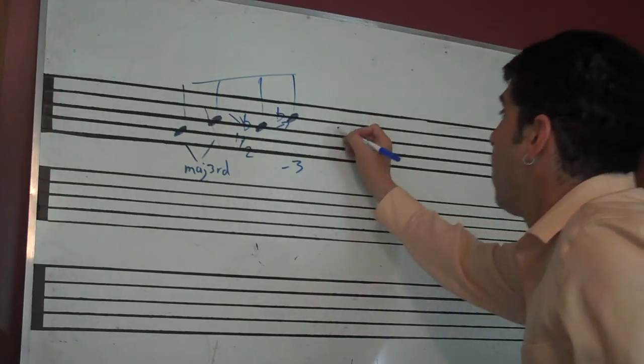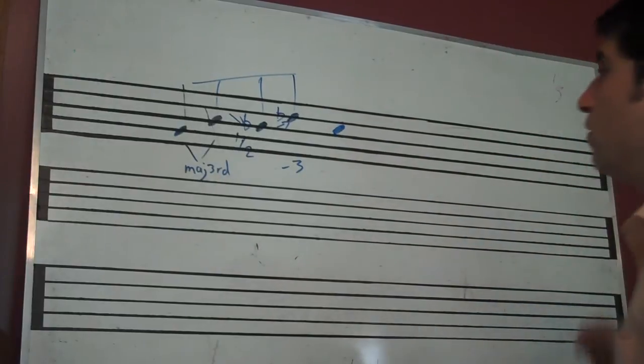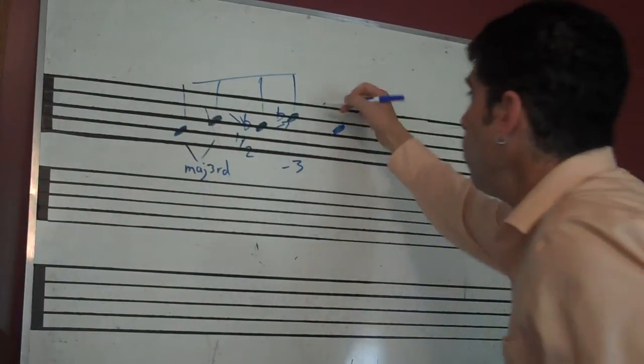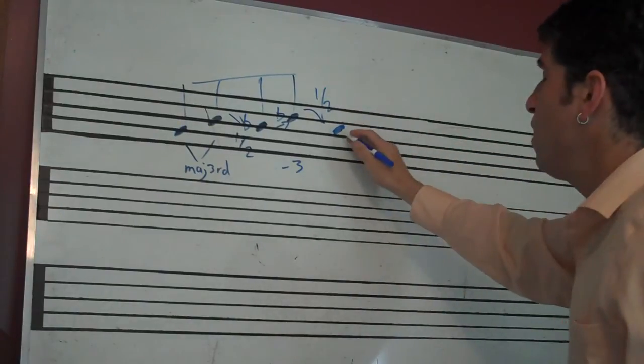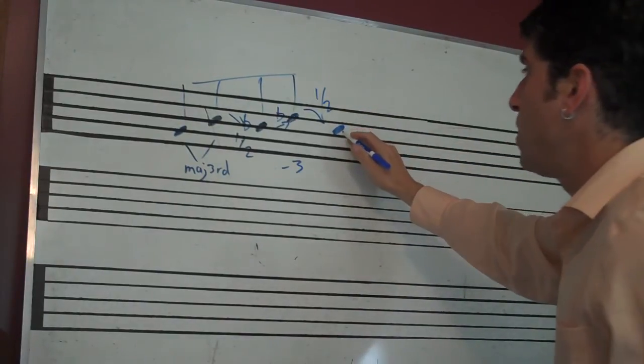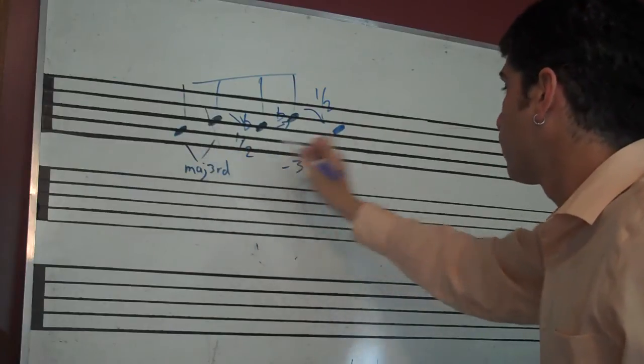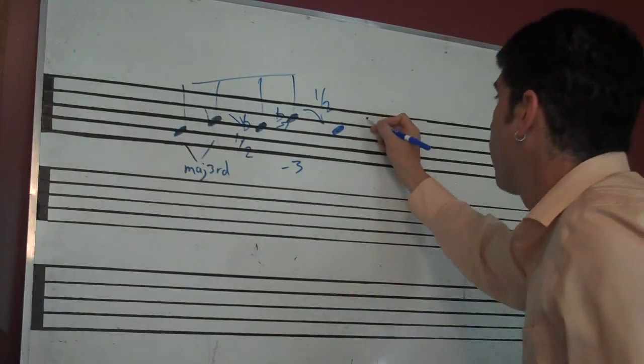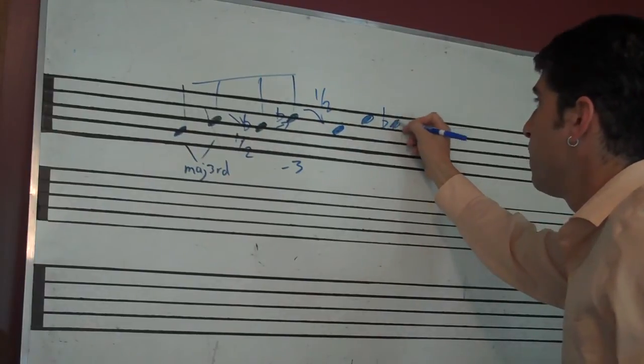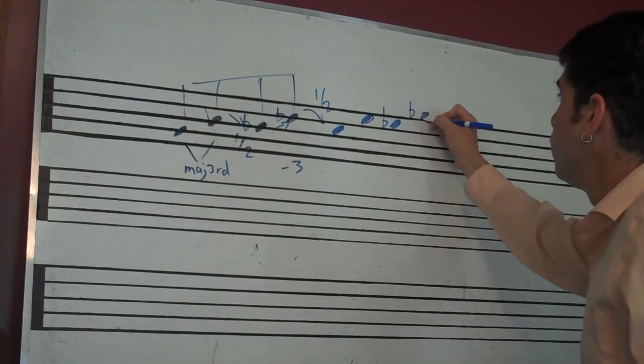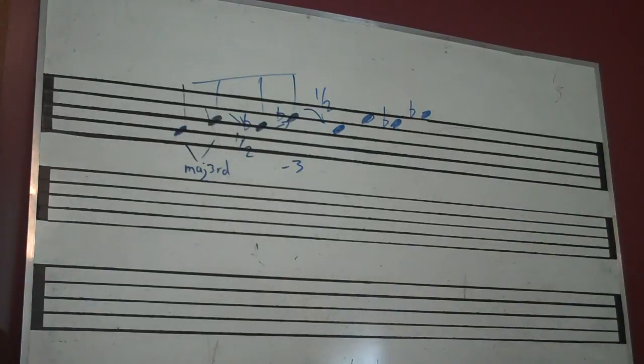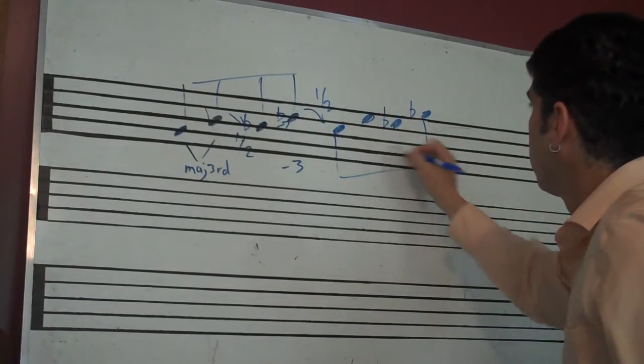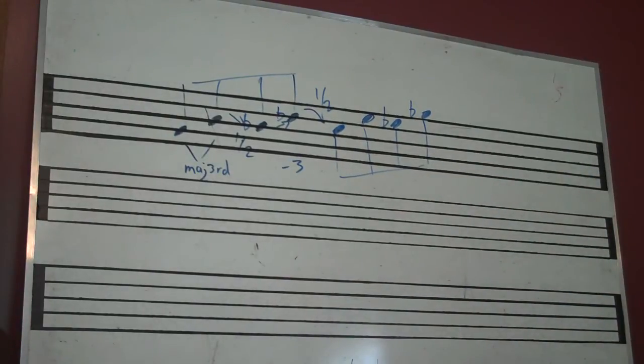Now we're going to go down a half step and do the whole thing again. We've gone down a half step to C. And now let's repeat the pattern. So we've got C, we're going to go up a major third to E, down a half step to E flat, and up a minor third to G flat. So here's how it sounds from the beginning. Kind of interesting.